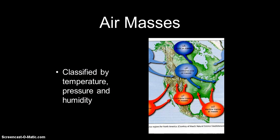Next thing I want you to look at is air masses. We need to come up with some general characteristics for what is considered to be an air mass. You see a picture with all different types of air masses. For a portion of air to be considered an air mass, it needs to have a similar temperature, pressure, and humidity. Those are how we classify air masses. Temperature and humidity make up a big part of how we name these masses.